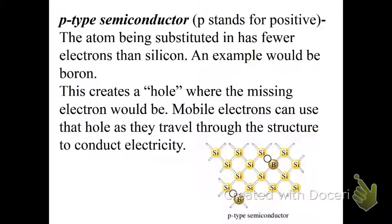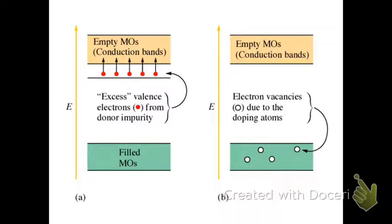The next type is a P-type, which is P for positive, and if you could guess, it's the opposite. It has fewer electrons. An example of that would be boron. This creates basically kind of a hole where the missing electron would be, and then they can use that to travel through the structure to be able to conduct electricity.